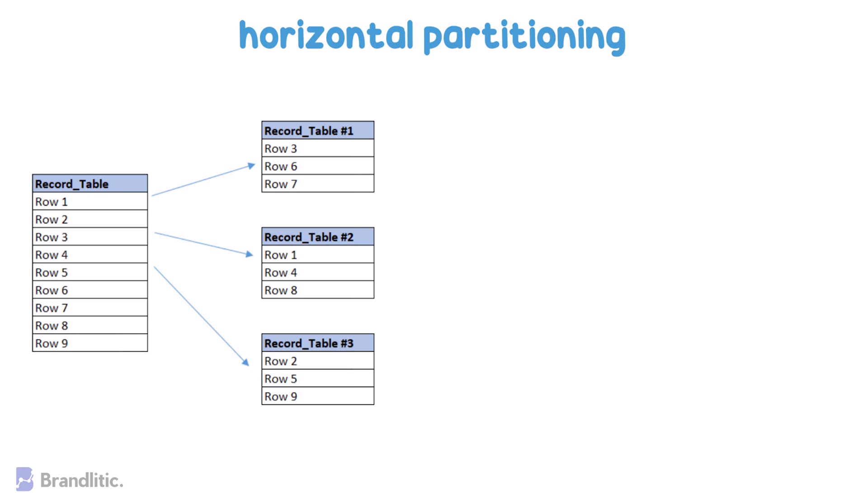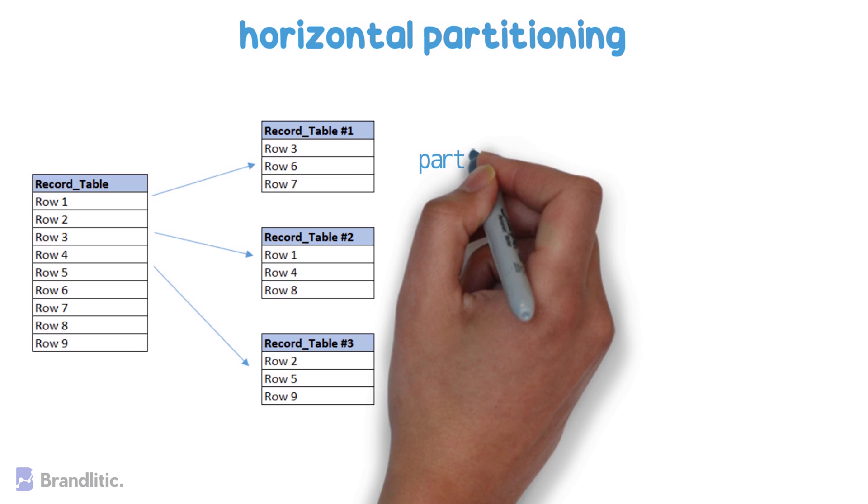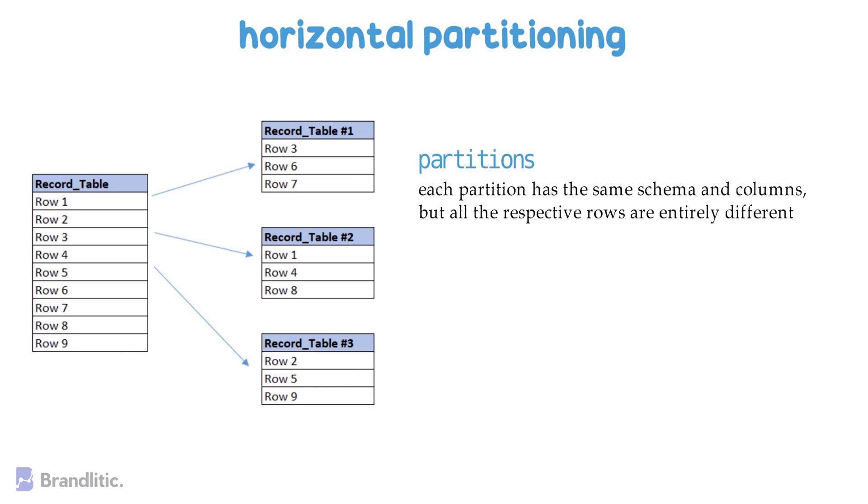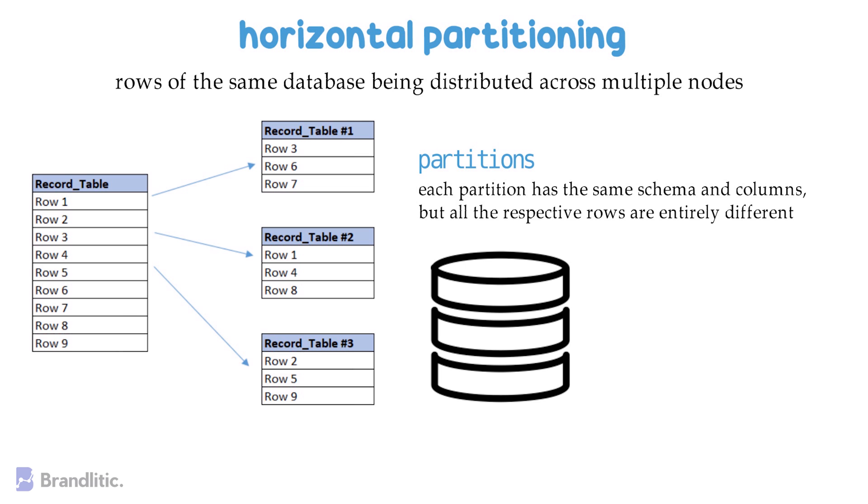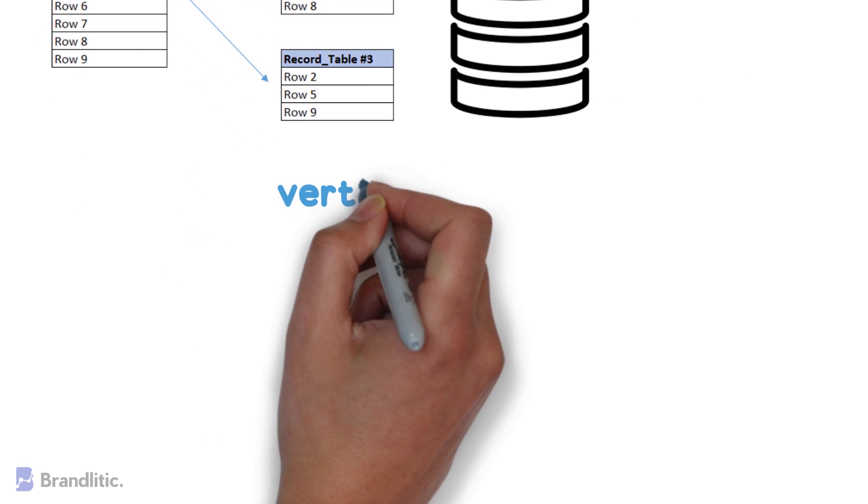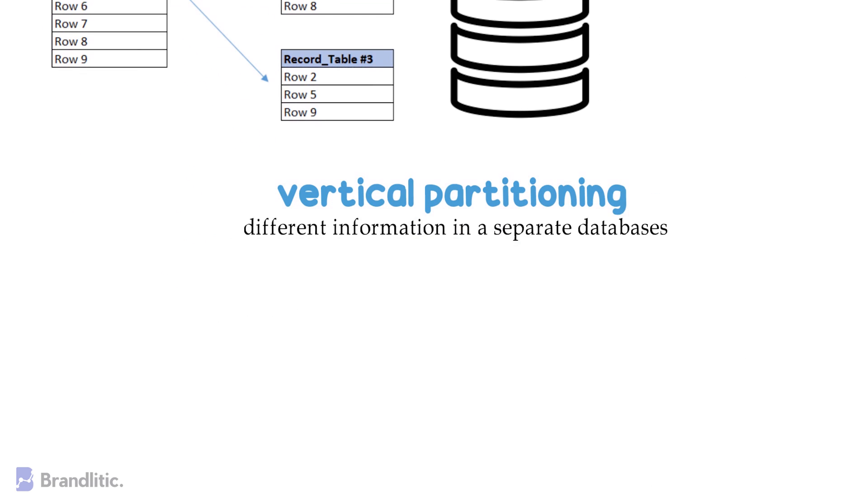we separate one table's rows into multiple different tables, which are also called partitions, and each partition has the same schema and columns. But all respective rows are entirely different. Likewise, the data held in each is unique and independent of the data held in other partitions. Also, remember that the database can split horizontally with rows of the same database being distributed across multiple nodes or